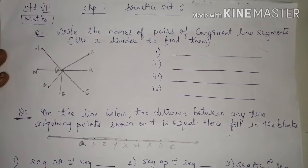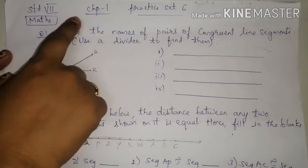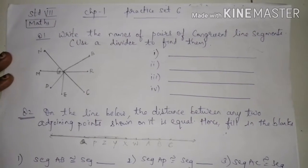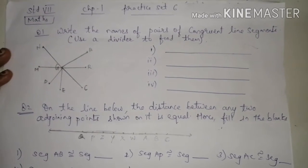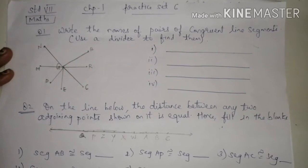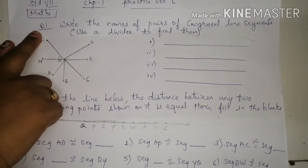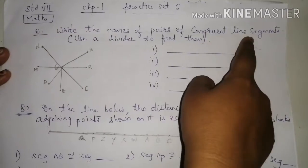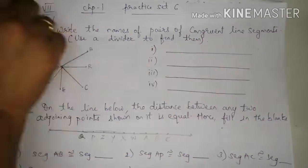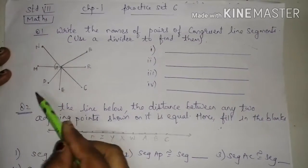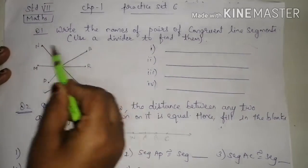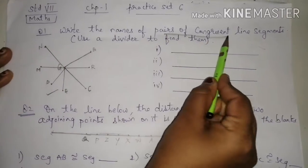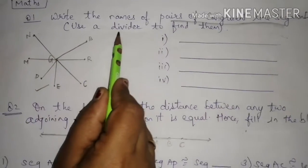Welcome students. Today let us start with our chapter — Practice Set 6. You must have understood and practiced till Practice Set 5. Now, Question Number 1: write the names of pairs of congruent line segments. A figure is given to you, and from this figure you have to find out the pairs of congruent line segments.